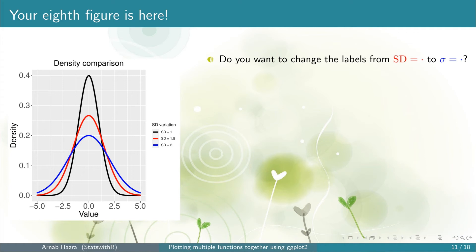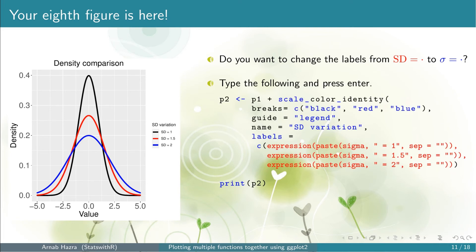Sometimes we prefer to use Greek letters within the legend. For example, sigma is a very common Greek letter used for the standard deviation of the normal distribution. You might want to replace 'SD = 1' etc. with 'sigma = 1' etc. To do that, replace each quoted label with expression(paste(sigma, '= 1', sep = '')) and similarly for the other two labels. We store the layers so far into p2.